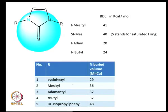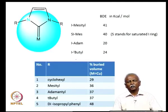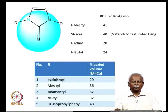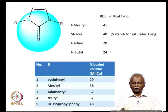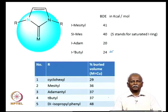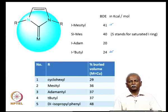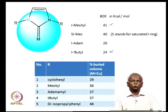The influence of buried volume is clearly seen in bond dissociation energy data. When the nitrogen substituents are large tert-butyl groups, the buried volume is significantly larger and the bond dissociation energy is smaller. When the substituent is a mesityl group — which is flat and occupies less space — there is a larger bond dissociation energy, indicating a stronger metal–carbon bond. Thus, the percentage buried volume is a good measure of the ligand's steric parameter and is directly related to metal–ligand bond strength.